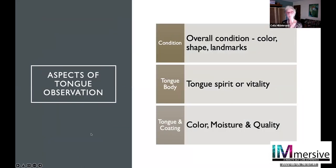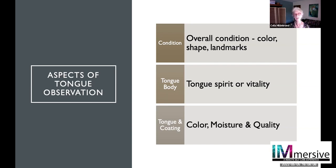The things we look for are the overall condition of the tongue — color, shape, landmarks. We look for whether the tongue has spirit or vitality, and we look for color, moisture, and quality. Almost every tongue has a different story, and those stories represent the internal operation of the human body, the spirit, and the level of vitality and life force we have. Some of that is displayed by how somebody puts out their tongue.